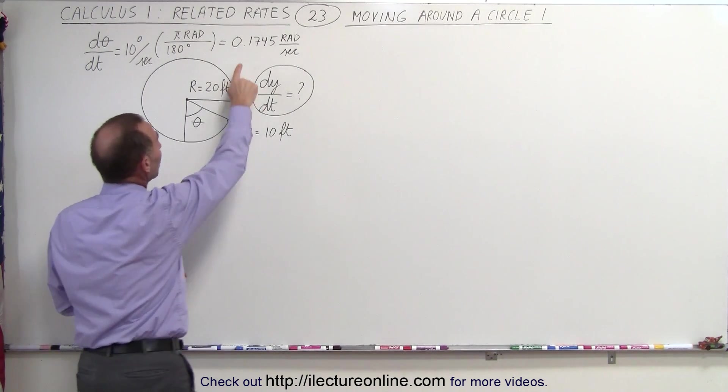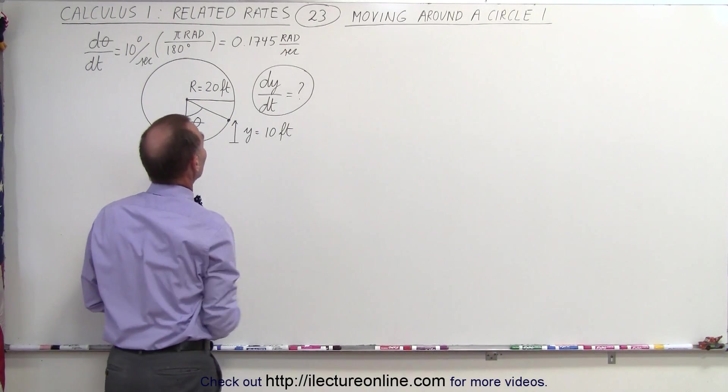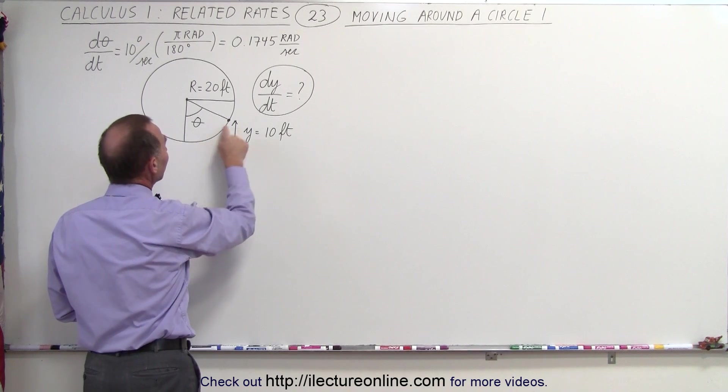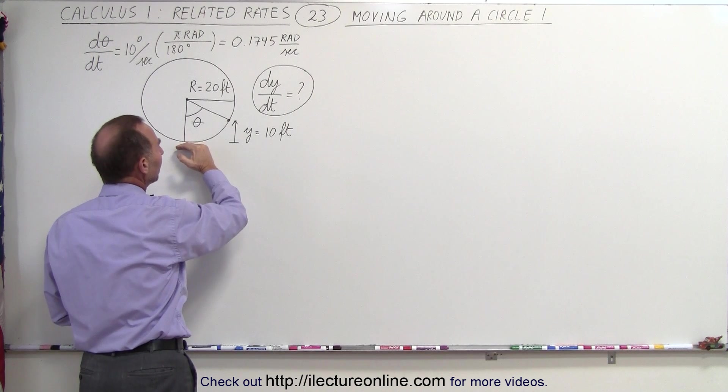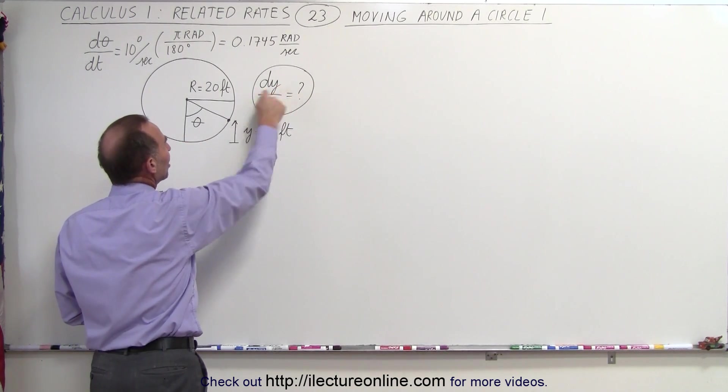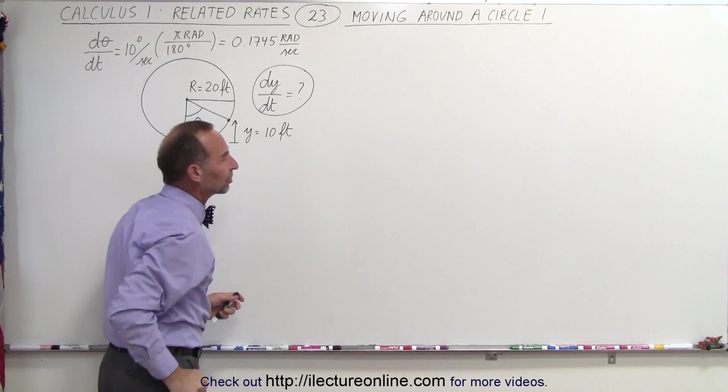Converted to radians, that's 0.1745 radians per second. When it hits the position right here, when it's 10 feet above the lowest point on the circle, we want to know what the rate of change in the height is with respect to time.